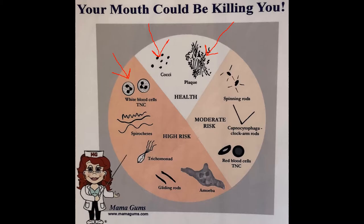There are certain things that we don't want to see that we know are high-risk kinds of microorganisms, and one of them particularly are spirochetes. Spirochetes are thin, wiggly, kind of worm-like bacteria.